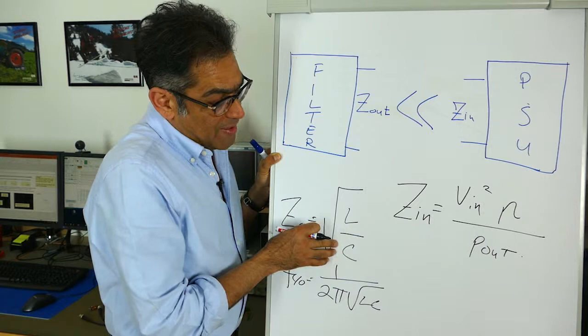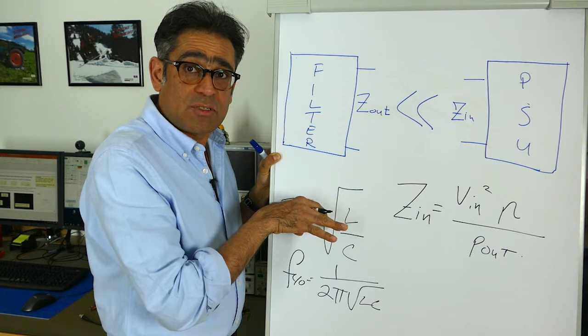So what happens if this Z_out gets close to Z_in? Well I have done a simulation.